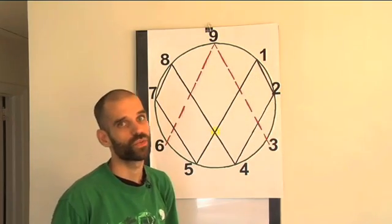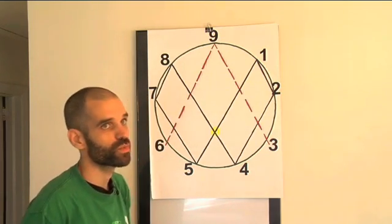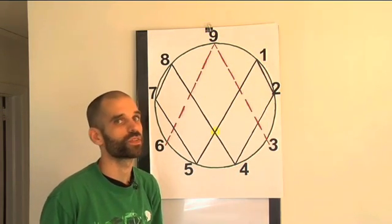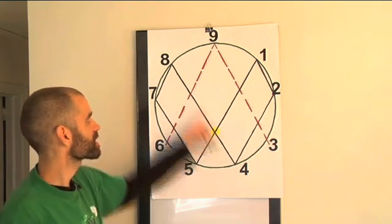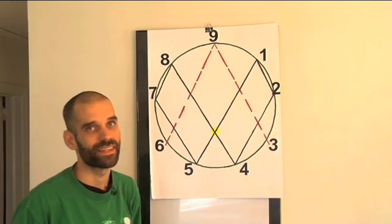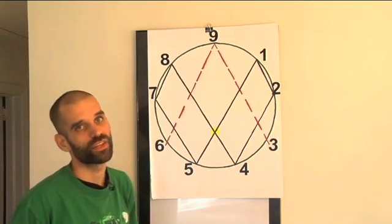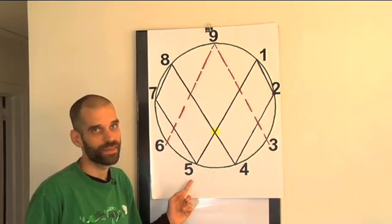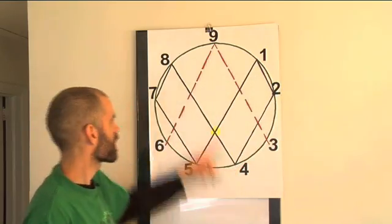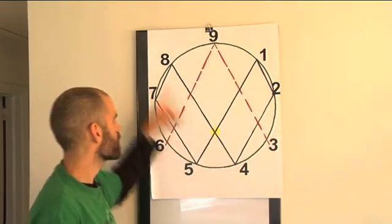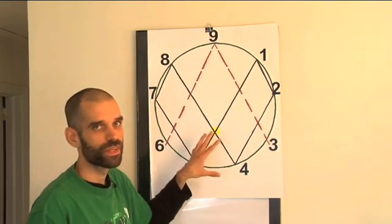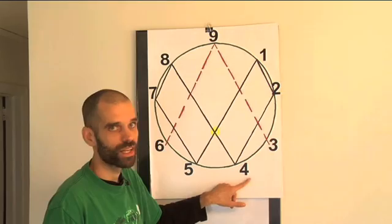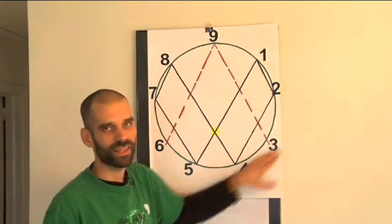64 doubled is 128. Eight plus two is 10. 10 plus one is 11. And one plus one is two. 128 doubled is 256, which reduces back to four. 256 doubled is 512, reducing back to eight. 512 doubled is 1024, which reduces back to seven. 1024 doubled is 2048, which reduces back to five. No matter how many times I go around, no matter what numbers I take and no matter what combination I do. In other words, I could say this is 11 where my two is here, because one plus one is two. 11 doubled is 22, and two plus two is four. There's no possible way to break this doubling sequence.